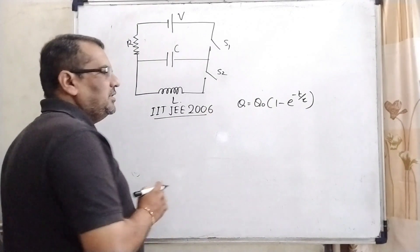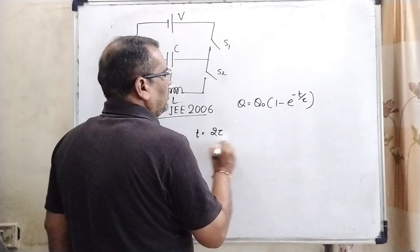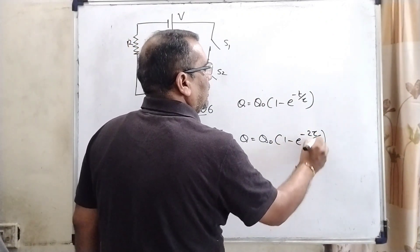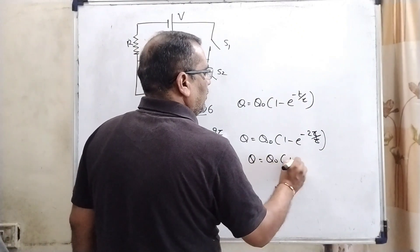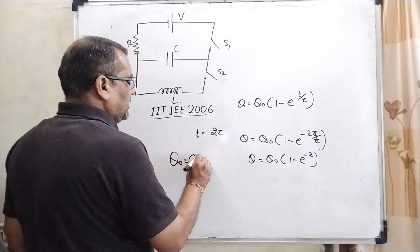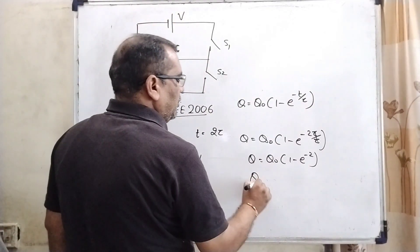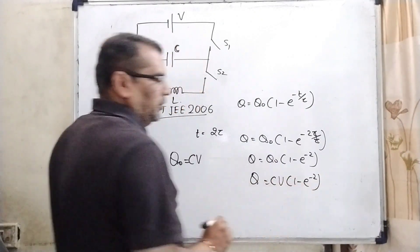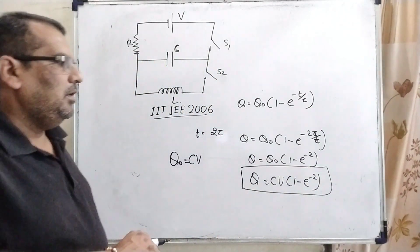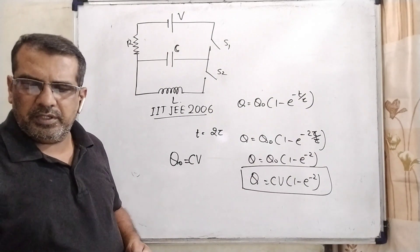Here Q naught is maximum charge. And whenever we put in the place of t, 2 tau, then we get the result Q naught (1 minus e raised to power minus 2). And as we know that maximum charge is CV, because maximum potential is V and capacitance is C. So, Q equal to CV into (1 minus e raised to power minus 2). So here, maximum charge of capacitor Q equal to CV into bracket (1 minus e raised to power minus 2). Option B is correct. I hope you understood this question.